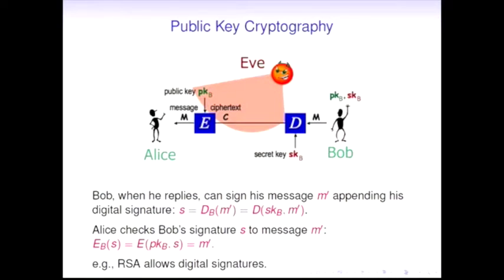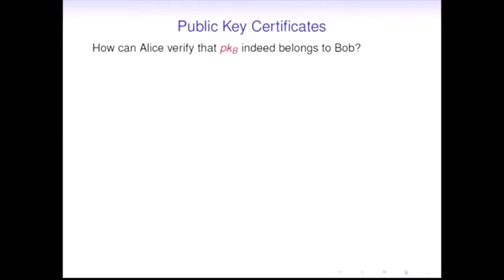This scheme can work in a different direction when Bob wants to authenticate his message sent to Alice, so Alice is assured that it's actually Bob who sent that message. He applies the decryption function to some hashed value or digest value of the message using his secret key and sends it alongside the message. Then Alice, using the encryption function with Bob's public key, verifies the signature. If it matches, then Alice is assured that it's actually Bob who sent this message and this message hasn't been altered during transmission.